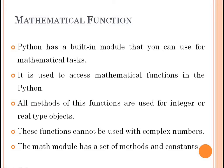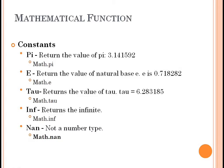We have built-in functions and mathematical functions. We have two sets: mathematical modules — methods and constants. The math module has a set of methods and constants. First, we have mathematical constants: pi, e, tau, infinite, and nan. Pi is a constant with a value of 3.14, accessed as math.pi.